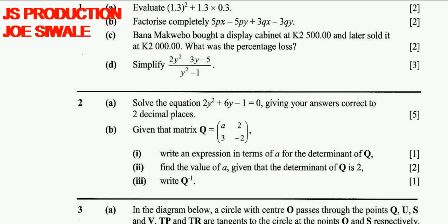Question 2a reads: solve the equation 2y squared plus 6y minus 1 equals 0, giving your answers correct to 2 decimal places. 5 marks.